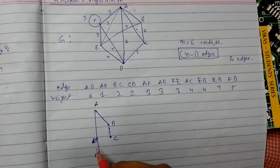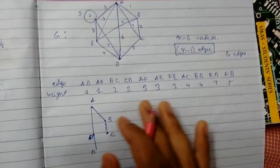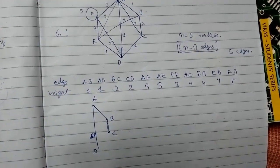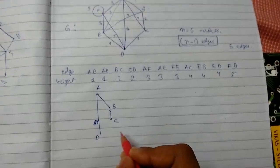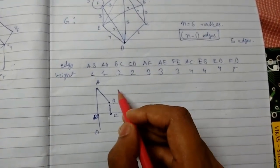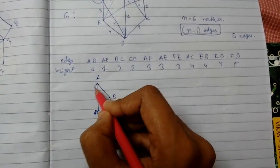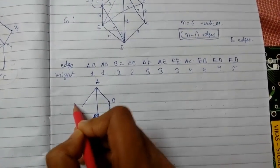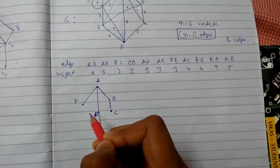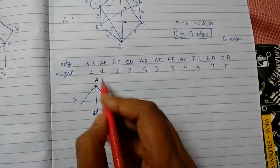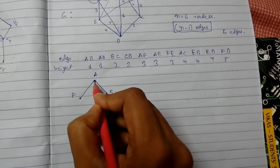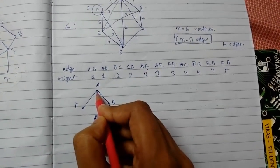Now AF, so AF can be drawn like this. Yes. Now AE was here, it was somewhere here, AE.